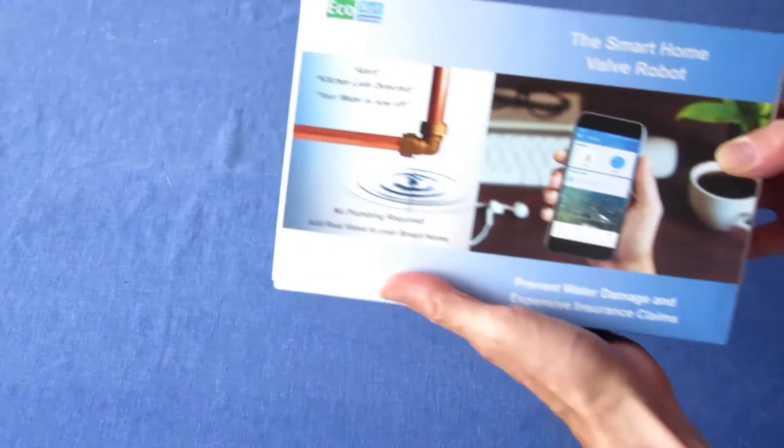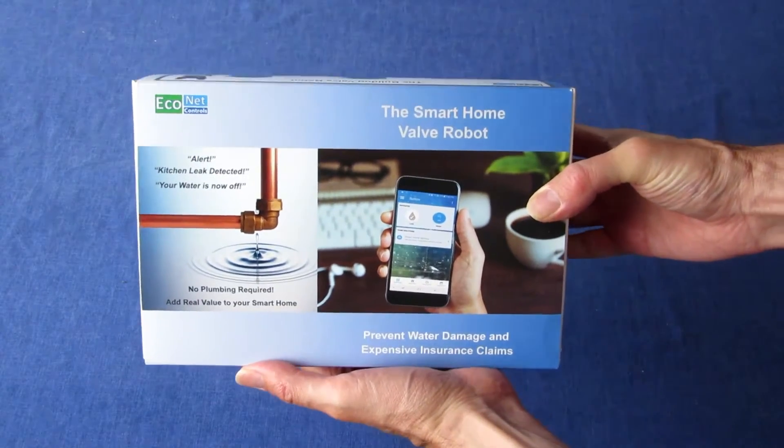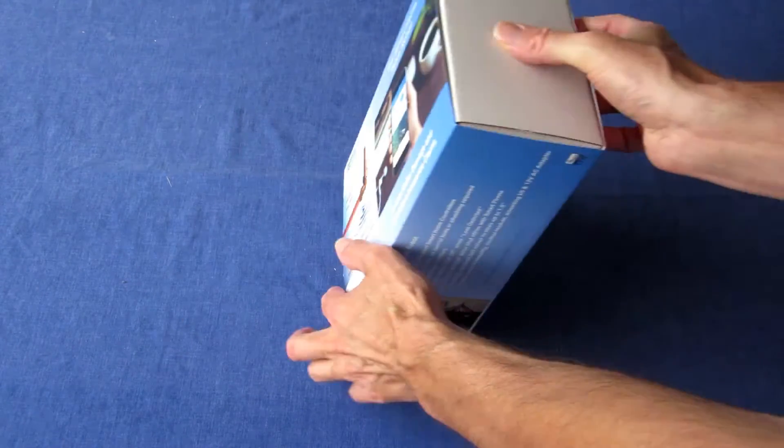The Econet Bulldog can be combined with a Samsung SmartThings Home Automation Hub and Econet leak sensors to automatically shut off your water and alert your smartphone whenever a leak is detected.